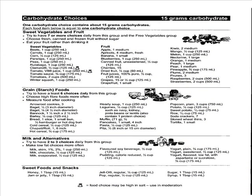Going back to the list of carbohydrate foods: if you're having a cup of rice, how many carbohydrate choices is that? Cooked rice: one-third of a cup equals one carbohydrate choice, or 15 grams. So a cup of rice is three carbohydrate choices, or 45 grams of carbohydrates. For pasta: half a cup of cooked pasta equals one carbohydrate choice. So a cup of pasta — a small fist — is two carbohydrate choices, or 30 grams of carbohydrate.